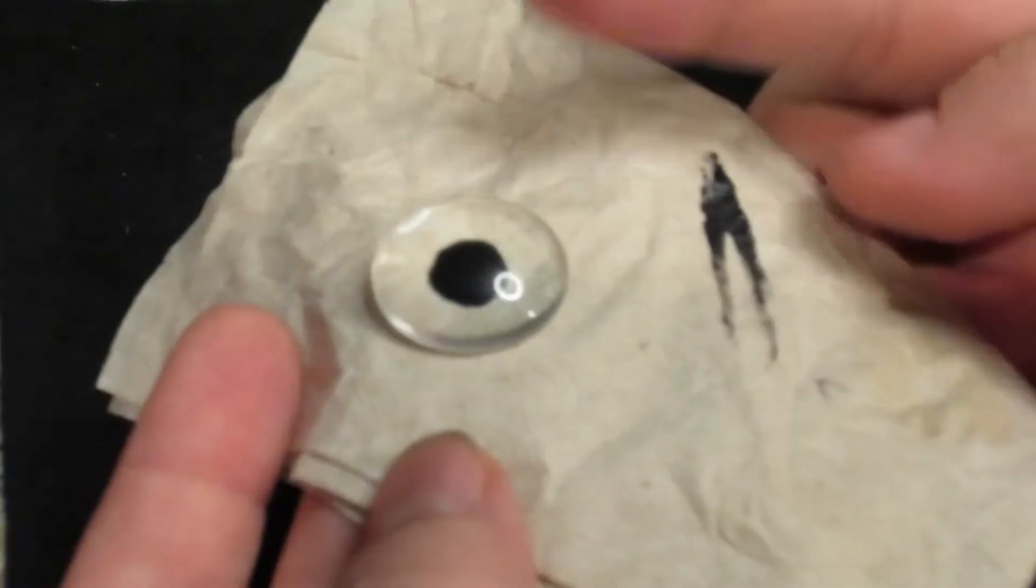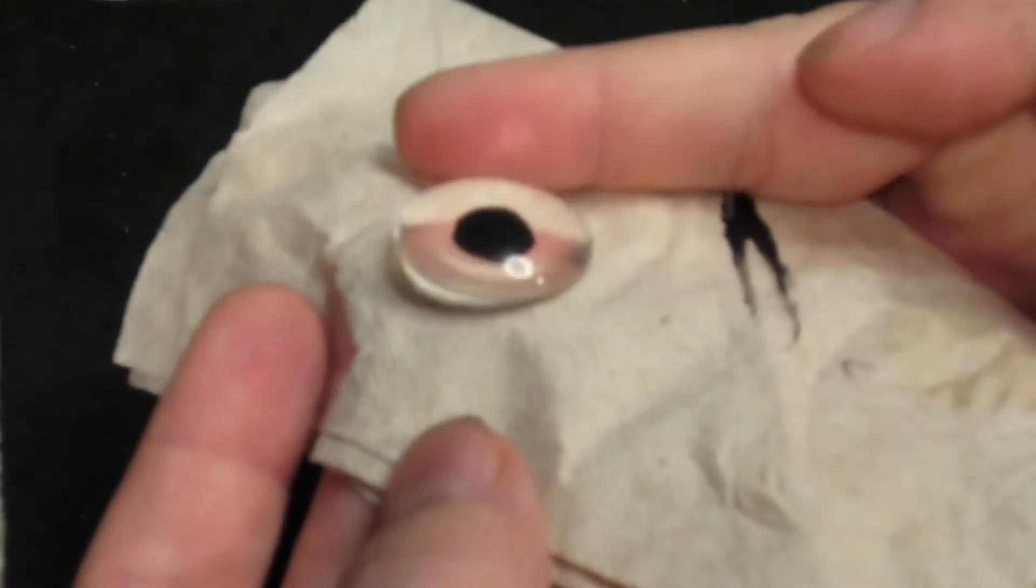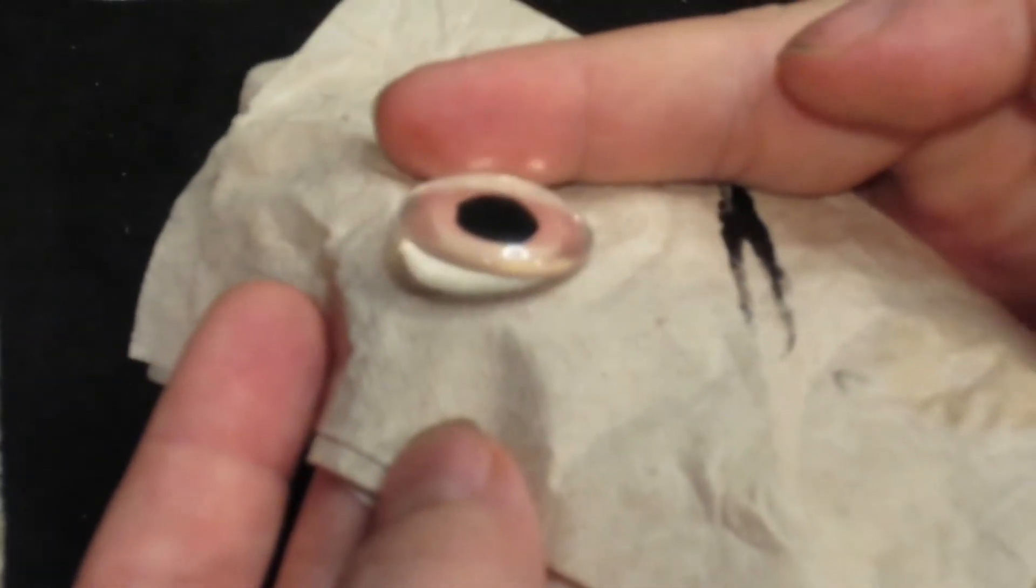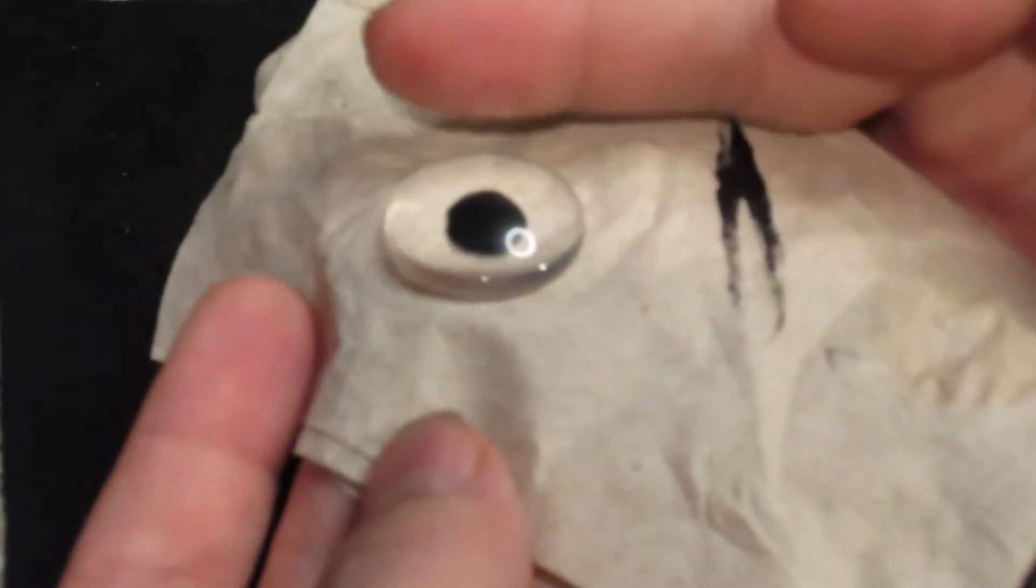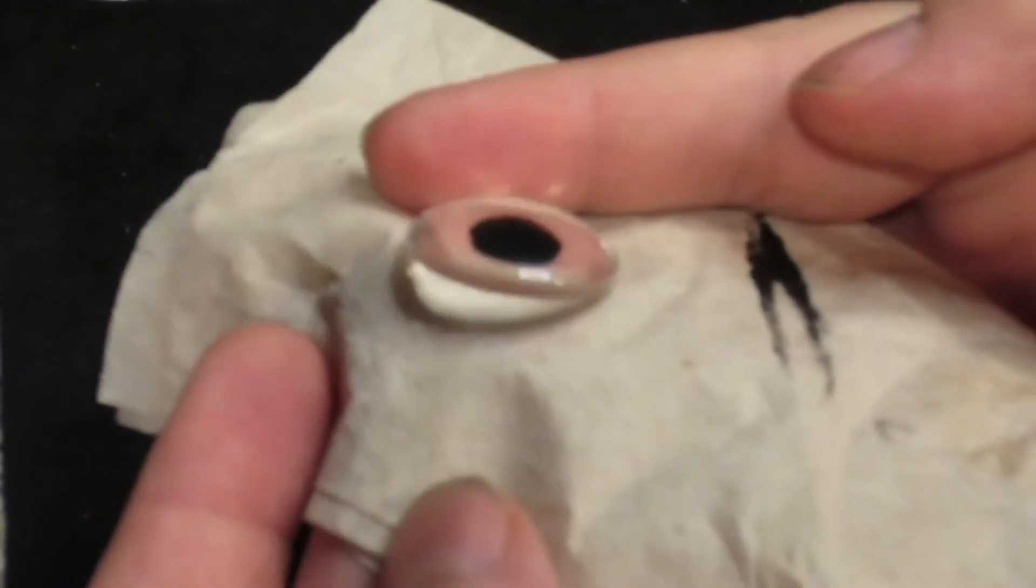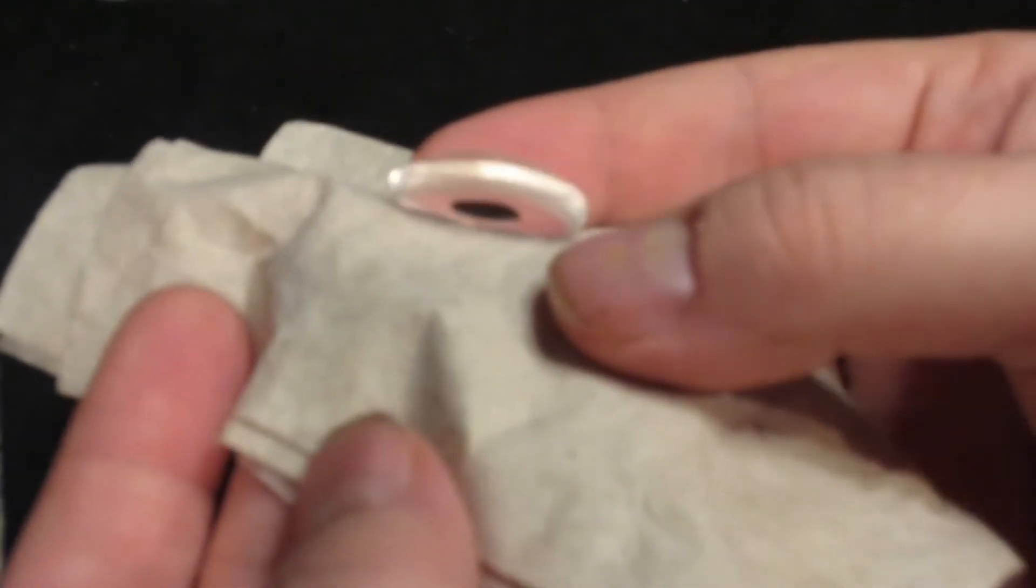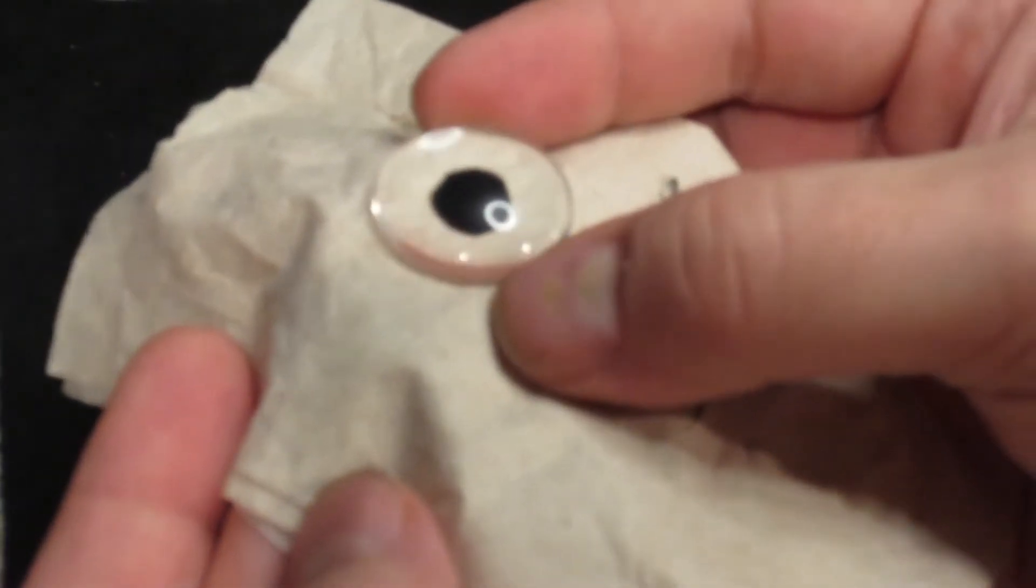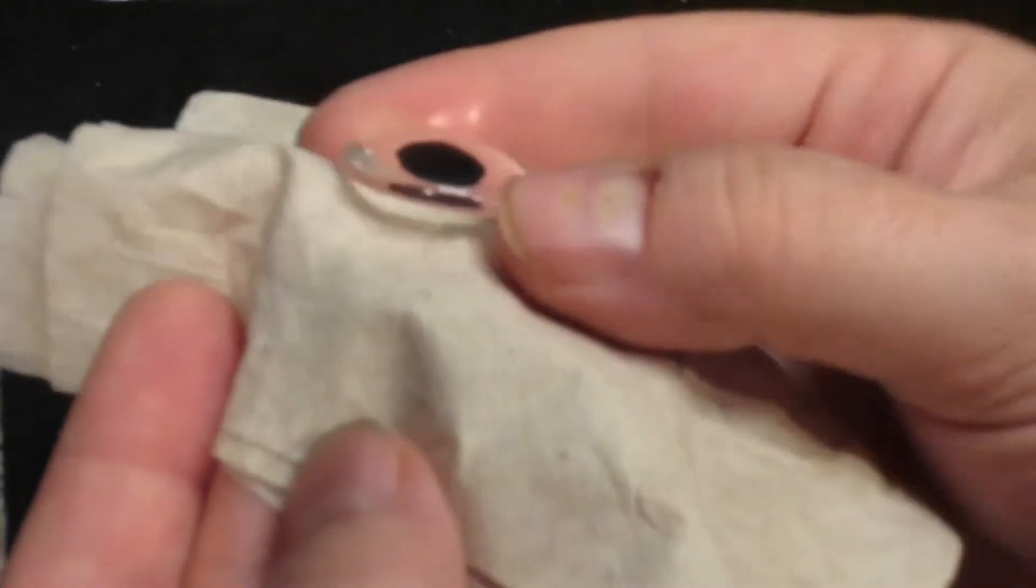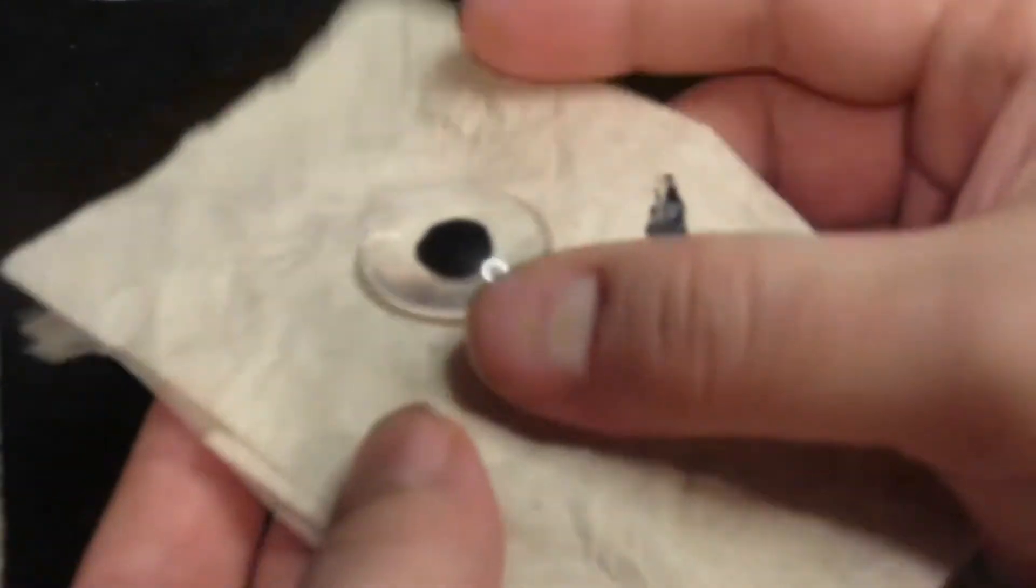When I turn the cabochon to the side you can see the distortion makes the pupil seem to float in the center of the glass even though it's just painted flat on the bottom. This effect happens anytime you look at the lens off-center which makes the pupil appear to be moving when really it's just you that's moving and your perspective that's changing.